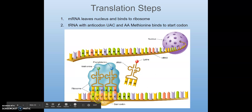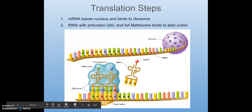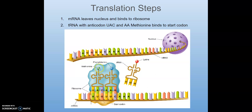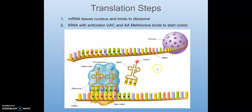We know that AUG is going to be the start codon, which starts the sequence of the protein. So you're going to see a U-A-C — the complement of that AUG — on the tRNA attached to that AUG, and then methionine, that amino acid, is going to be the first amino acid in the sequence. Then it takes the next three pairs: U-U-C complements with the anticodon A-A-G from the tRNA, and phenylalanine attaches to the methionine, growing the amino acid chain.